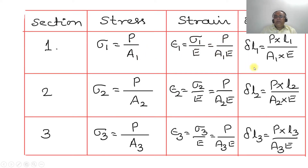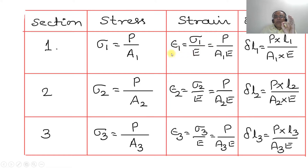The change in length delta_L1 is obtained from epsilon1 = delta_L1 / L1. Substituting epsilon1 = P/(A1·E), we get delta_L1 = P·L1 / (A1·E), since the material is the same throughout.